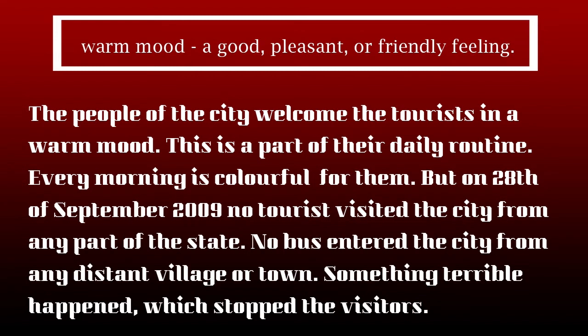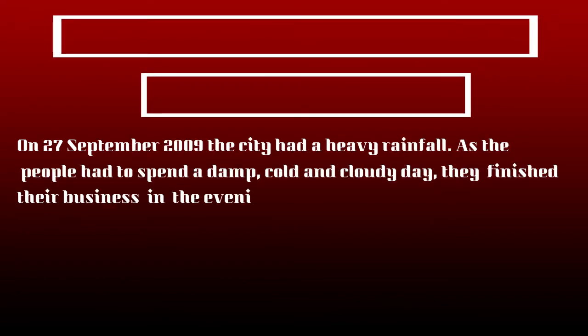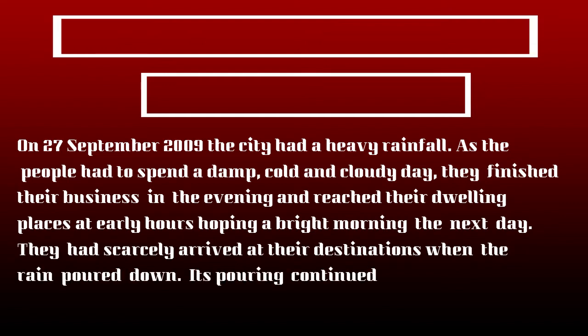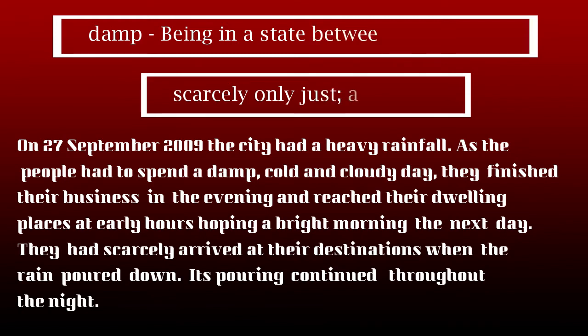On 27th September 2009, the city had heavy rainfall. As the people had to spend a damp, cold and cloudy day, they finished their business in the evening and reached their dwelling places at early hours, hoping for a bright morning the next day. They had scarcely arrived at their destinations when the rain poured down. The pouring continued throughout the night. Damp means being in a state between dry and wet. Scarcely means only a short time before.